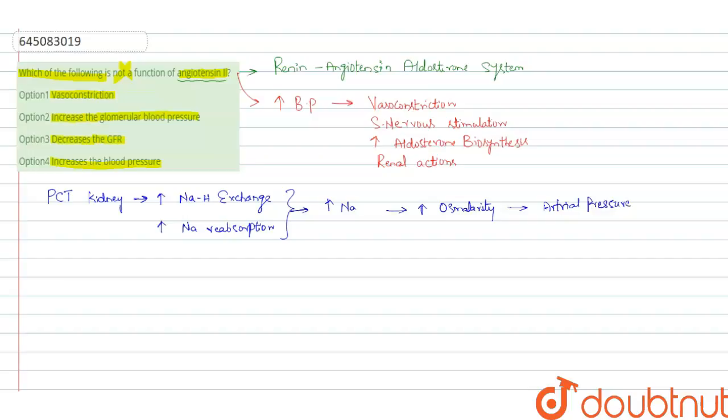Angiotensin 2 also acts on the adrenal cortex, especially on zona glomerulosa, thereby it stimulates the release of aldosterone.